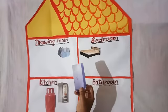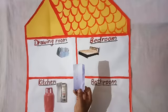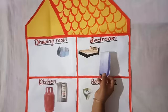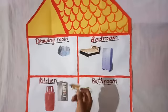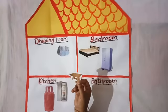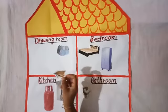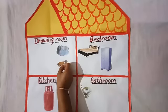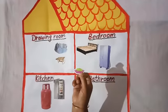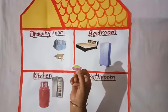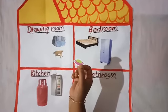The cylinder is in the kitchen. This is an almirah. The almirah is in the bedroom. This is a table. The table is in the drawing room. This is a soap. It is in the bathroom.